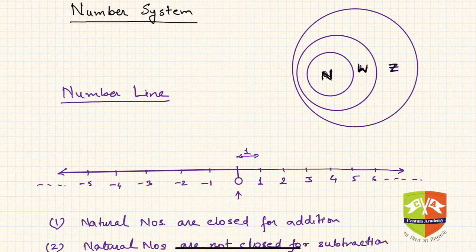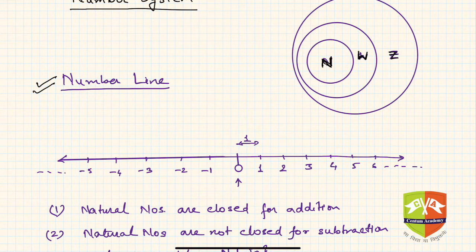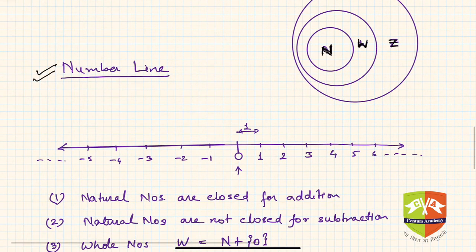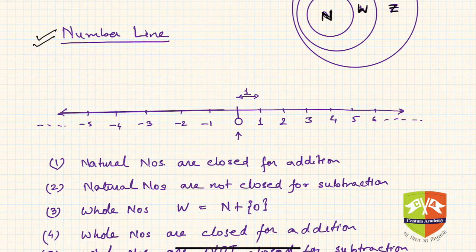Going forward, we'll discuss more types of numbers. We also learned the concept of the number line. The set of integers is like a universal set so far, where the sets of whole numbers and natural numbers are both contained within the set of integers. So the set of integers is the largest set we have at this point.